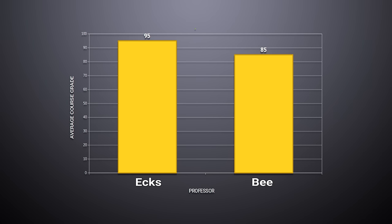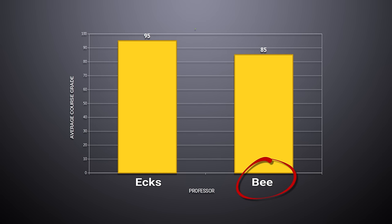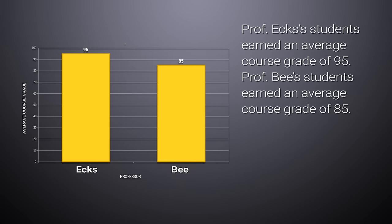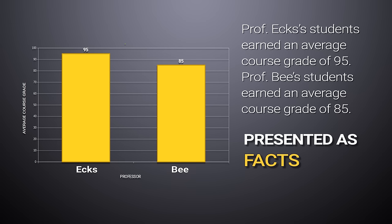Let's look at this chart. It shows the average course grades that students received in a course. Half of the students took the course with Professor X; the other half took it with Professor B. Professor X's students earned an average course grade of 95. Professor B's students earned an average course grade of 85. These statements are presented as facts, and the information is accurate — I can check it right here in the graph.